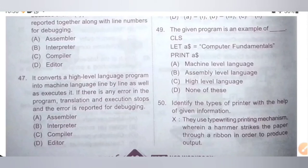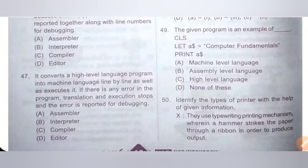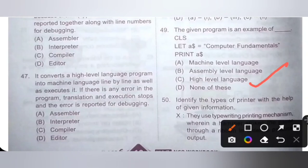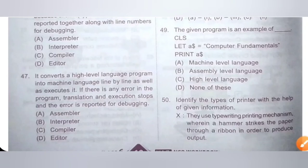Question 49: The given program is an example of dash. The program shown is: CLS, Let A$ = "Computer Fundamentals", Print A$. Options: A. Machine level language, B. Assembly level language, C. High level language, D. None of these. It is an example of high level language. Option C is the correct answer.